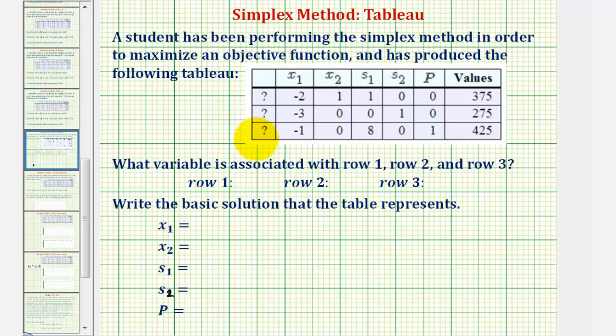So let's begin by determining the active variables by analyzing the columns of our tableau. A column that contains only a one and zeros indicates which variables are active or basic.